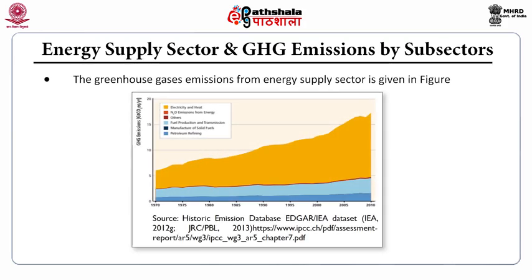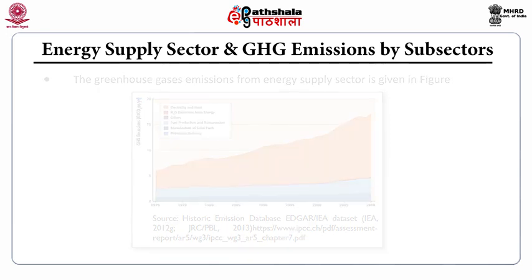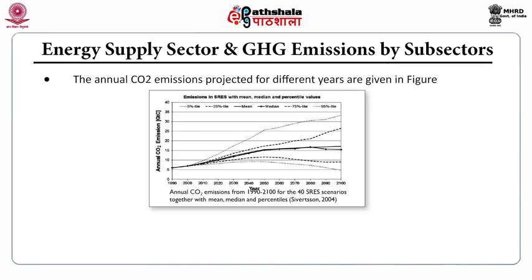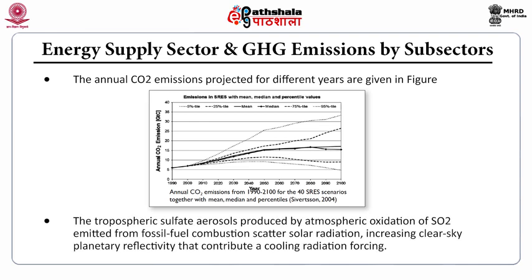This figure shows the greenhouse gas emissions from various energy supply sectors like electricity and heat, fuel production, manufacture of solid fuels, and petroleum refining. Another figure shows the annual carbon dioxide emissions projected for different years. The tropospheric sulfate aerosols produced by the atmospheric oxidation of sulfur dioxide emitted from fossil fuel combustion scatter solar radiation, increasing the clear-sky planetary reflectivity, which contributes a cooling radiative forcing.